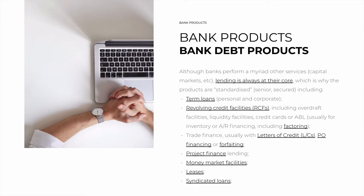Of course, these rates may be floating, and they may be completely different in your country or in the year that you're reading this. Bank products usually include, first, term loans — very simple, individual or corporate: a given amount of capital, the principal, over a given amount of time, the maturity.